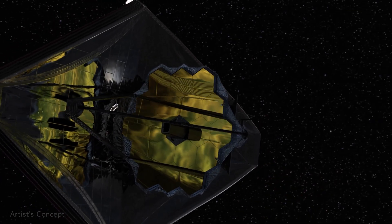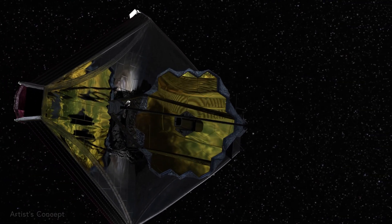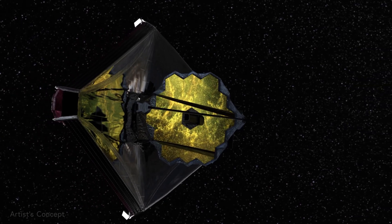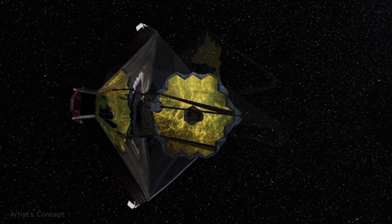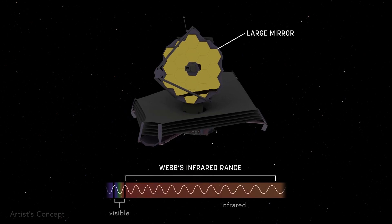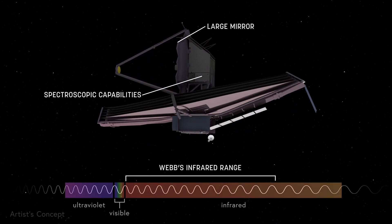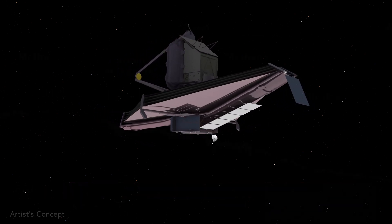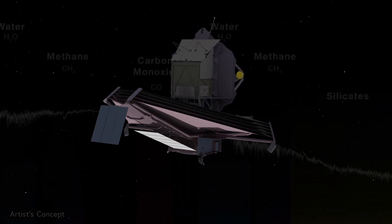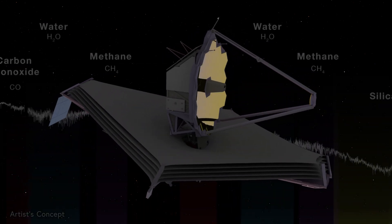The James Webb Space Telescope is helping answer these questions by observing some of the most interesting exoplanets astronomers have identified so far. With its large mirror, high degree of infrared sensitivity, and spectroscopic capabilities, Webb can explore a greater diversity of molecular components of an exoplanet's atmosphere than ever before.